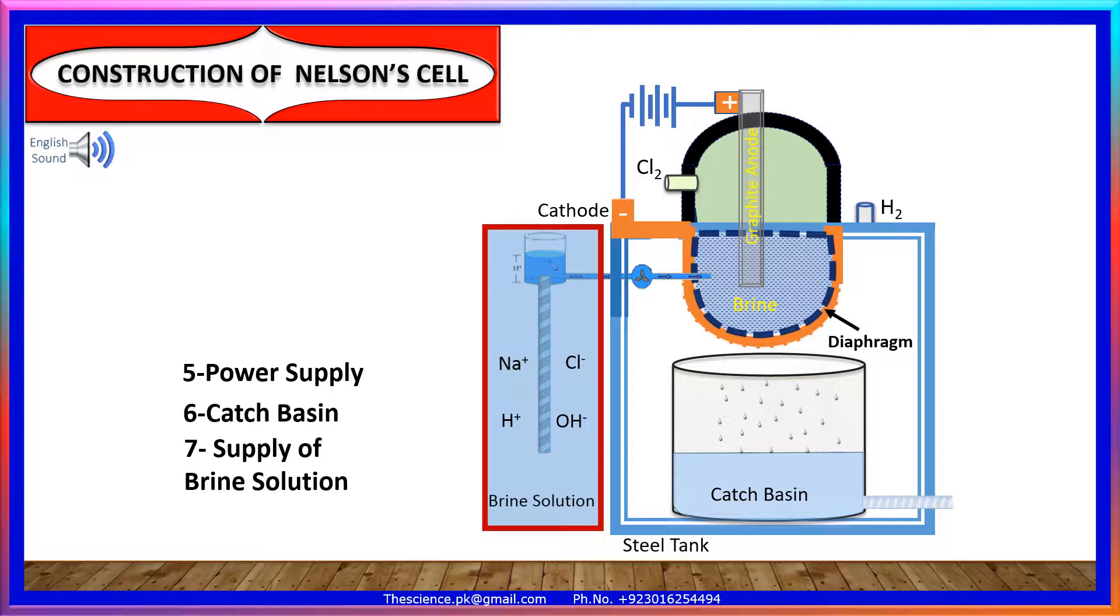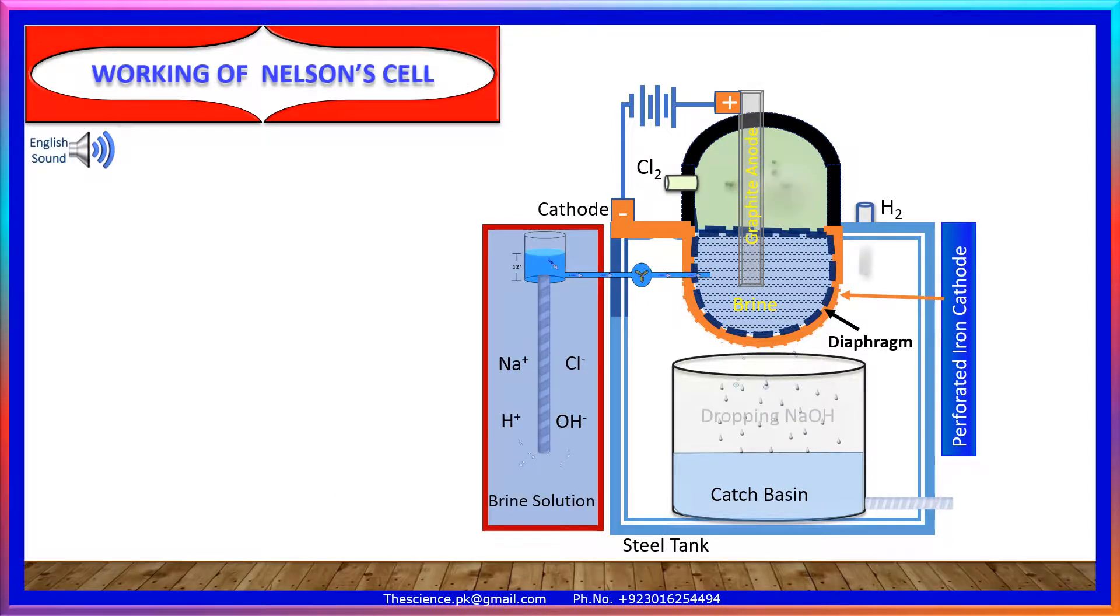Supply of Brine solution. Working of Nelson cell: Brine ionizes to produce ions, 2NaCl gives 2Na+ plus 2Cl- ions.